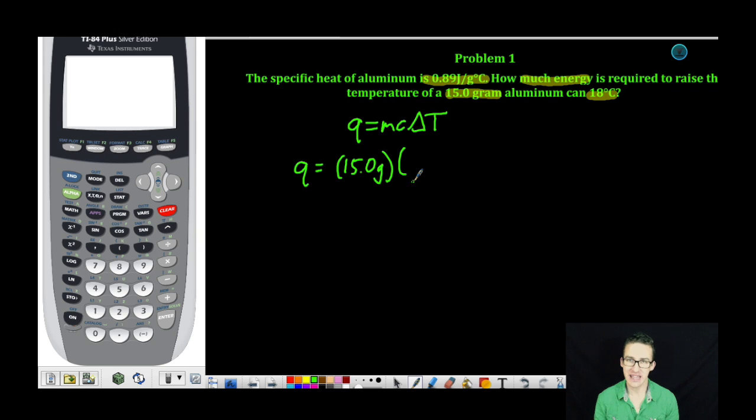Our specific heat provided to us in the problem is 0.891 joules per gram degree Celsius. And we're told that the temperature changes 18 degrees.